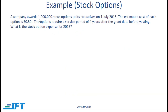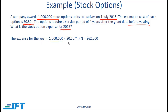Here is an example. A company awards 1 million stock options to its executives on 1st July 2015. The estimated cost of each option is $0.50. The options require a service period of four years after the grant date and before vesting. What is the stock option expense for 2015? We have 1 million options times $0.50, giving a total fair value of $500,000. We divide by four because the service period is four years, giving $125,000 per year. Since the options were granted in the middle of 2015, we multiply by one-half for the second half of the year, so the expense for 2015 is $62,500.